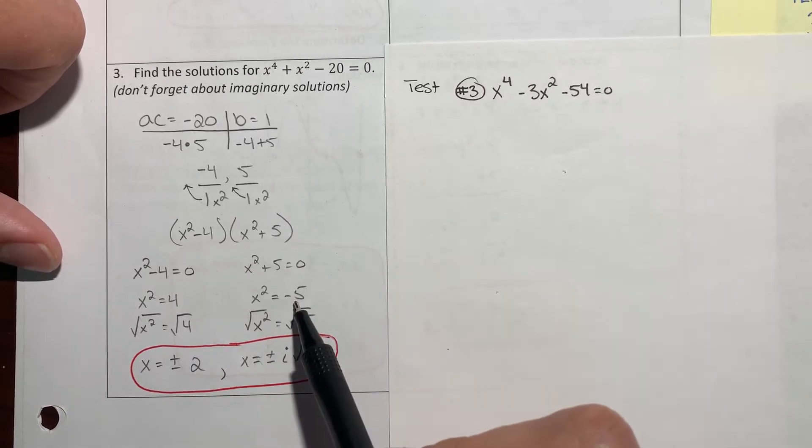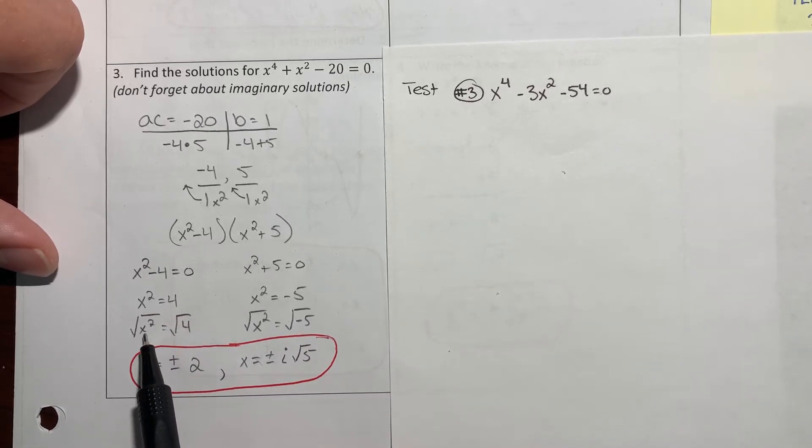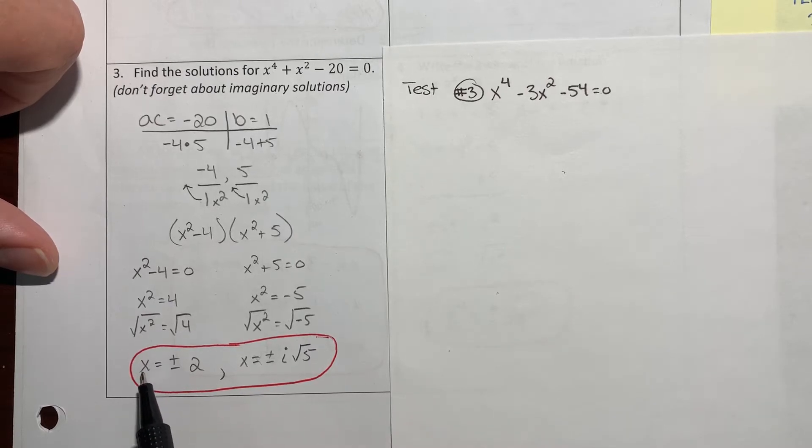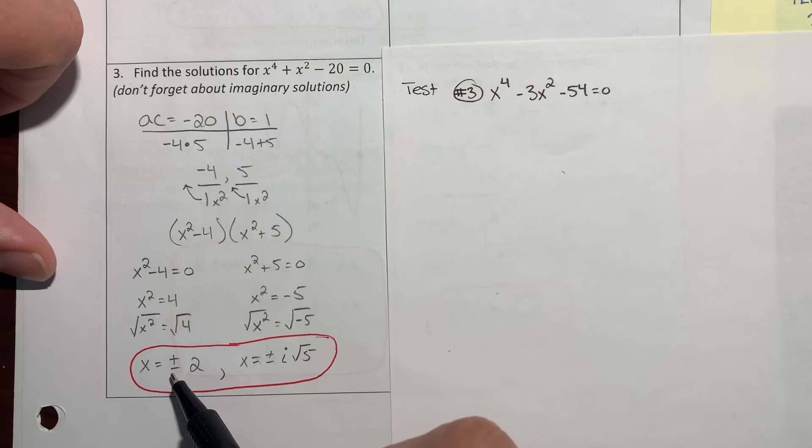Now I square root each one of these. The square root of x squared is just x, and the square root of four is two, but you got to remember to put that plus minus in front of it. So the answer here is x equals plus or minus two, or basically positive or negative two.